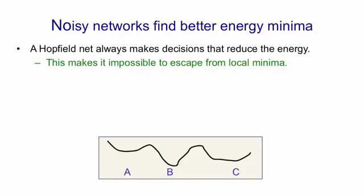If you look at the landscape here, if we get into the local minimum A there's no way we're going to get over the energy barrier to get to the better minimum B because we can't go uphill in energy.